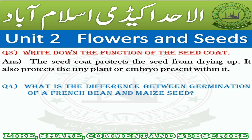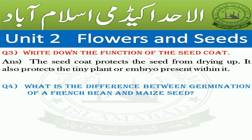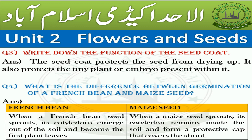Question number four: what is the difference between germination of a French bean and maize seed? Answer: when a French bean seed sprouts, its cotyledons emerge out of the soil and become the first seed leaves. When a maize seed sprouts, its cotyledon remains inside the soil and forms a protective cap that covers the shoot.